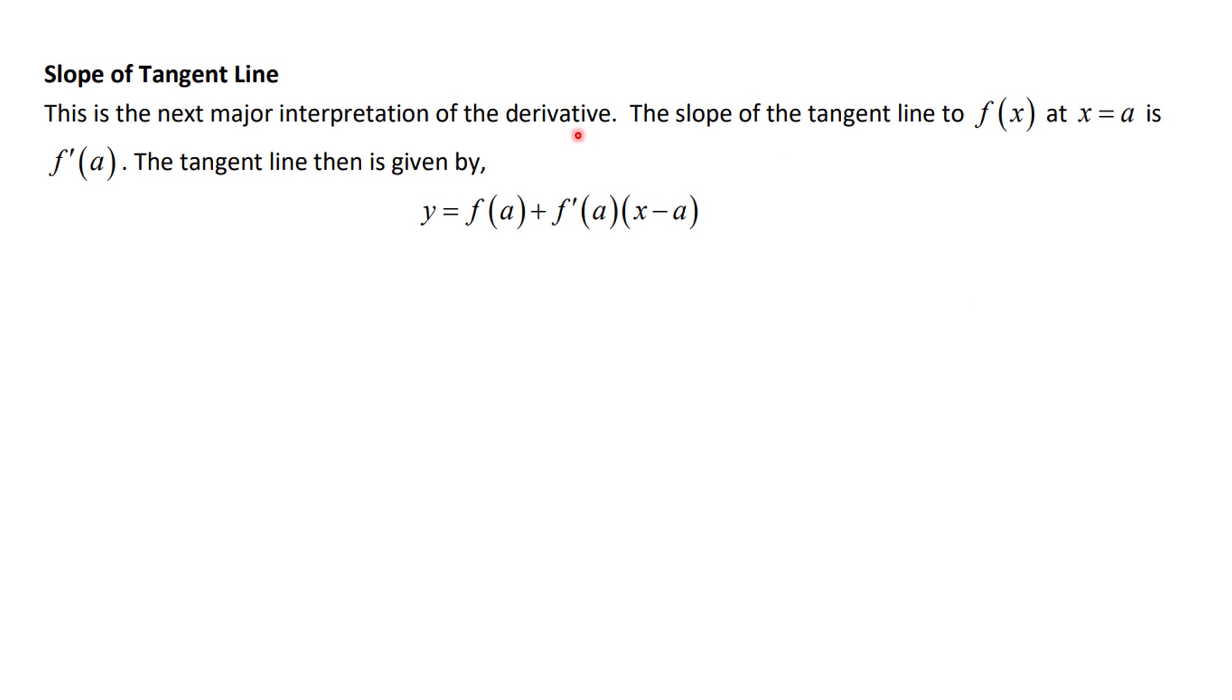The next major interpretation is the slope of the tangent line to f of x at x equal a is f prime at a. And then the tangent line is given by, and you can think about this as being y minus the y-coordinate is equal to the slope times x minus the x-coordinate.